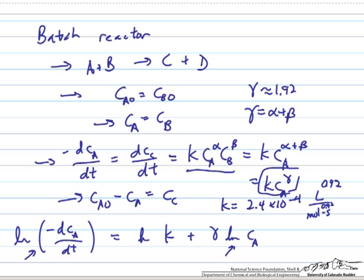In this screencast, instead of using purely differential analysis, we're going to take the information that we got from the differential analysis, which was that gamma was approximately equal to 1.93 and k was equal to 2.4 times 10 to the minus 4, and use those as initial guesses in a nonlinear regression in order to solve for the rate.